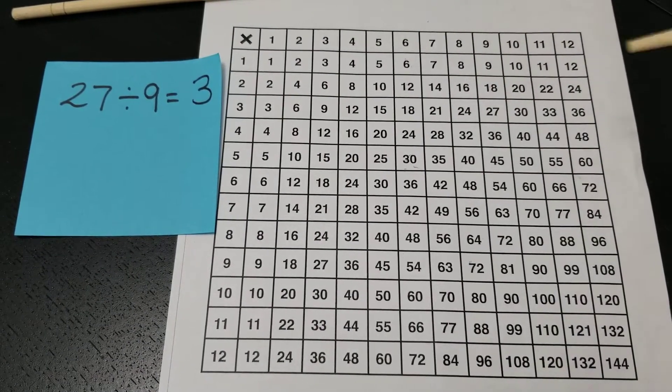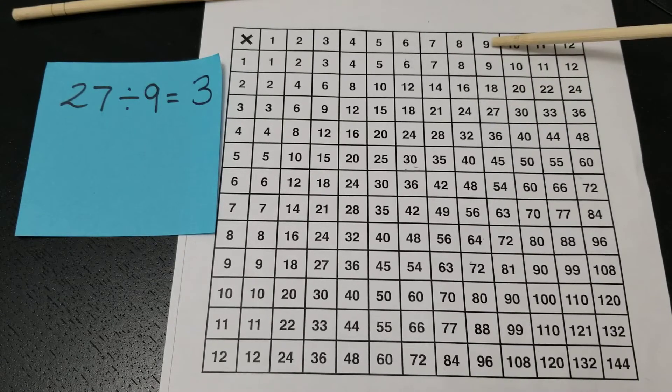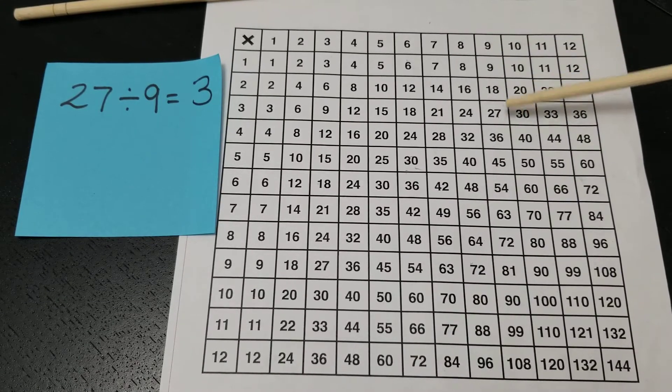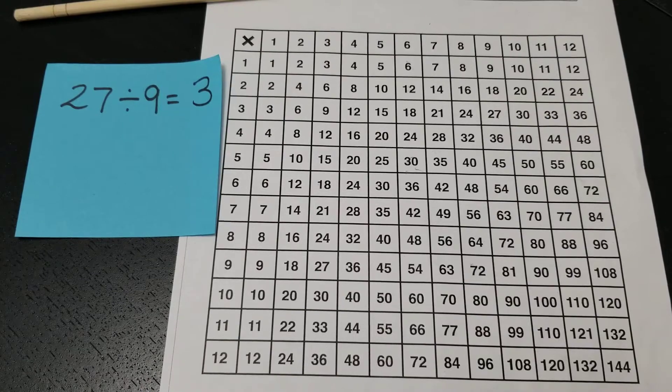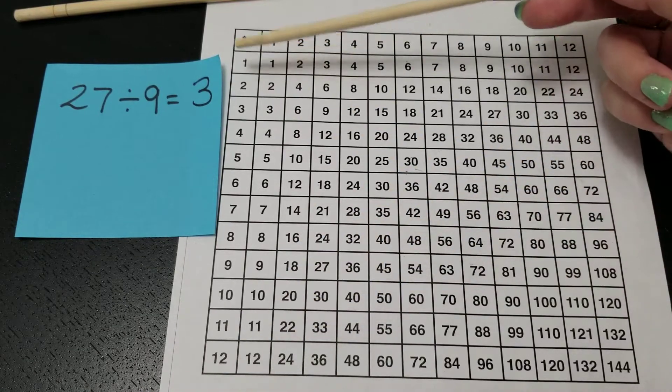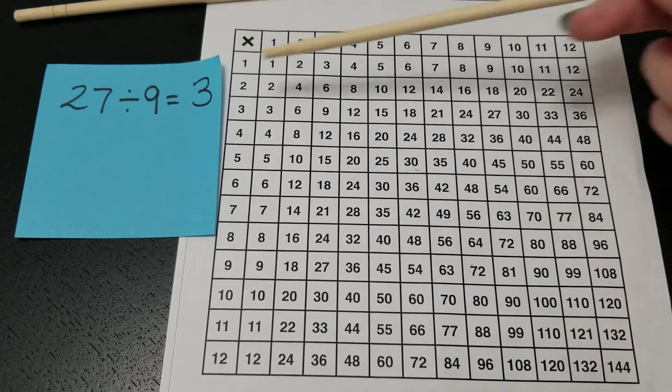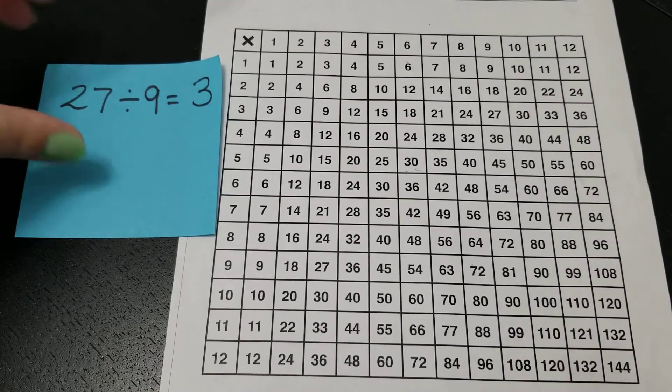I could also count if I wanted. 27 divided by 9 and count 1, 2, 3. This will only work if your multiplication chart does not include the row 0. If it includes the 0, you have to skip it in order to count.